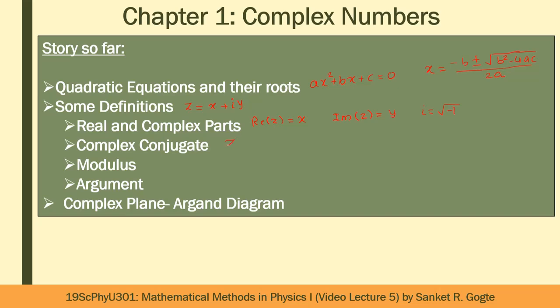Then we defined the complex conjugate. For a complex number z = x + iy, its complex conjugate is denoted by z*, which is obtained by reversing the sign of the imaginary part, giving x − iy. We also defined the modulus or absolute value of the complex number, which is √(x² + y²). Since x and y are real numbers, mod z will always be a real positive number. Modulus is the distance between the point representing the complex number and the origin in the Argand diagram. We also defined the argument θ = tan⁻¹(y/x), which is the rotational angle made by the line joining the point to the origin with the positive real axis.